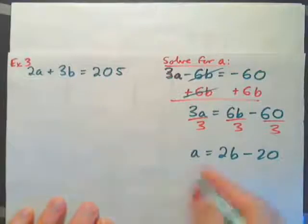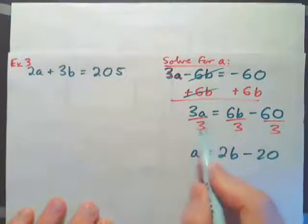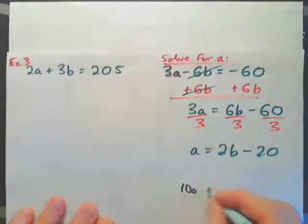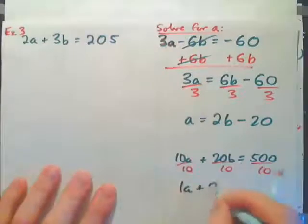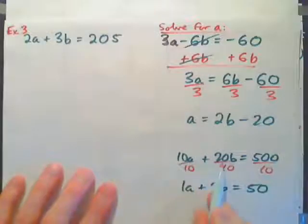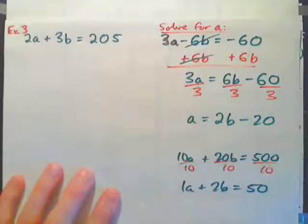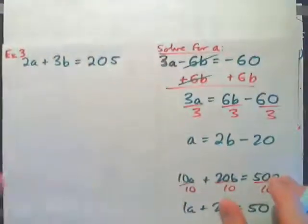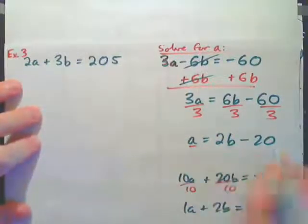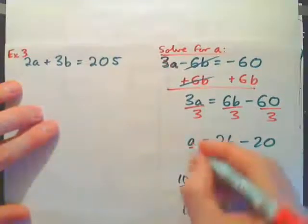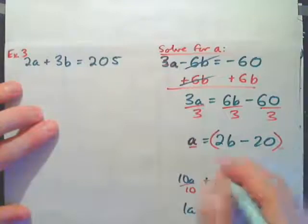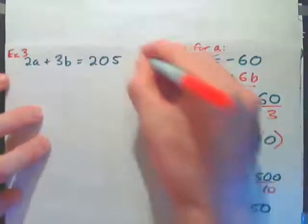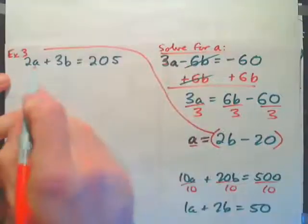We can divide every term in an equation by the same number. For example, if 10 apples plus 20 bananas cost 500 cents, dividing everything by 10 gives 1 apple plus 2 bananas costs 50 cents. So we're left with a equals 2b minus 20. Now a is the variable by itself, so we're going to substitute this expression in for a in the other equation.